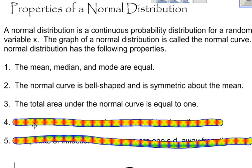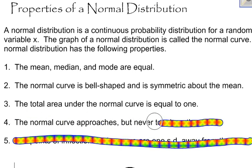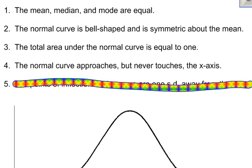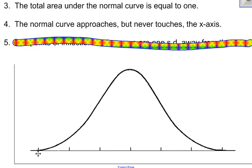So let's continue here. Two other properties. The next one says the normal curve approaches but never touches the x-axis. So down here, this curve looks like it touches the x-axis or the horizontal axis here, but in reality, it's getting really close without touching. It's kind of like an asymptote.